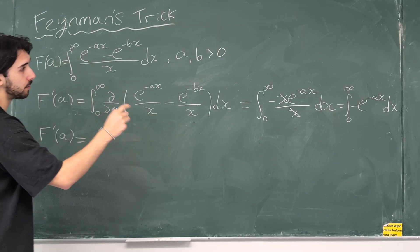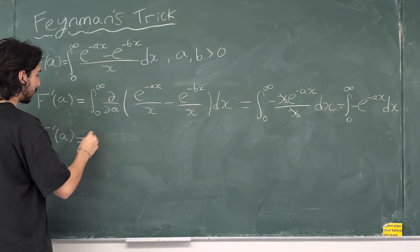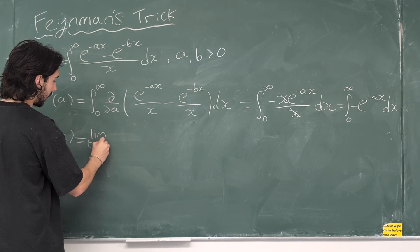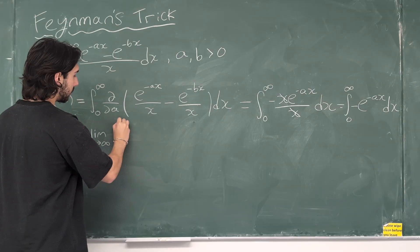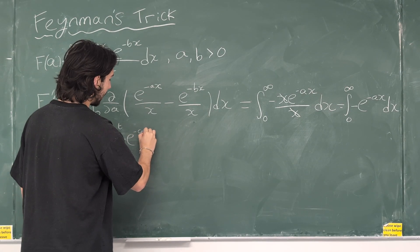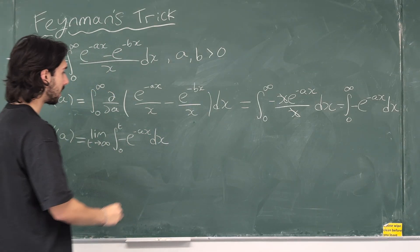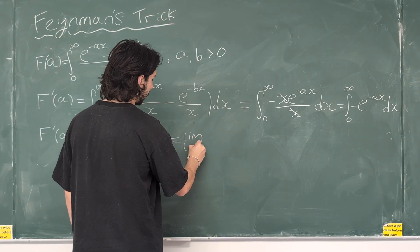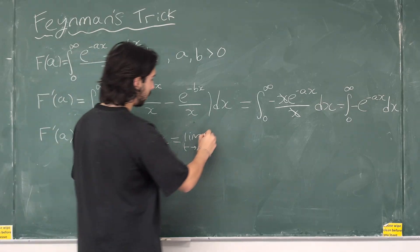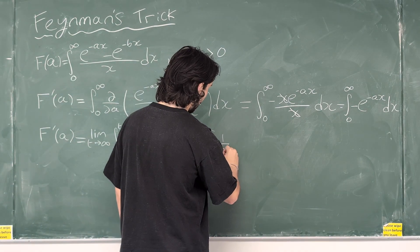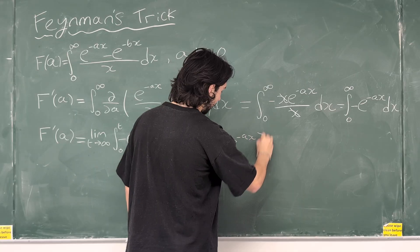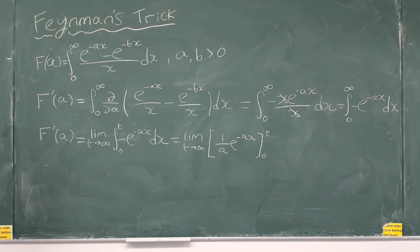The integral from 0 to infinity of minus e to the minus ax. First of all, let's do it with limit notation because this is an improper integral. The limit as t approaches infinity of the integral from 0 to t of minus e to the minus ax dx. And that's going to be the limit as t approaches infinity of, if we integrate e to the minus ax, we're going to get minus 1 over a times e to the minus ax, and there's already a minus there. So, it's 1 over a e to the minus ax from 0 to t. Have a look at that. Make sure that you're really happy with that because we're going with respect to x now, so not a, so that is how it works.